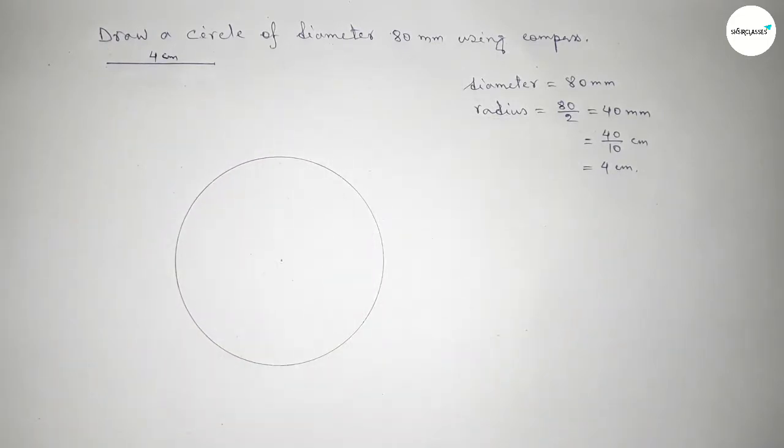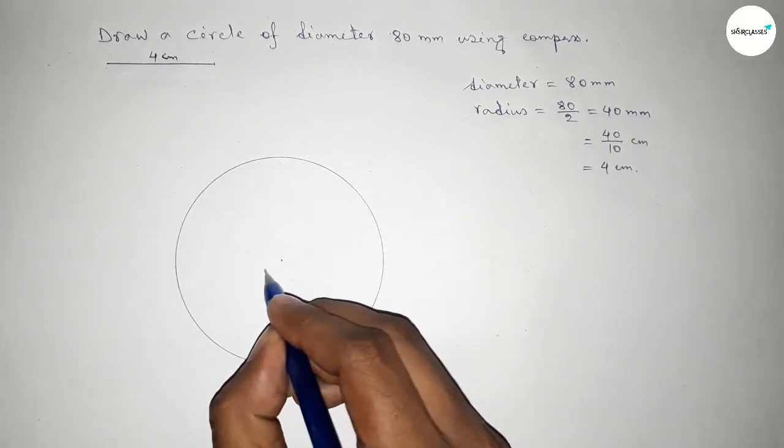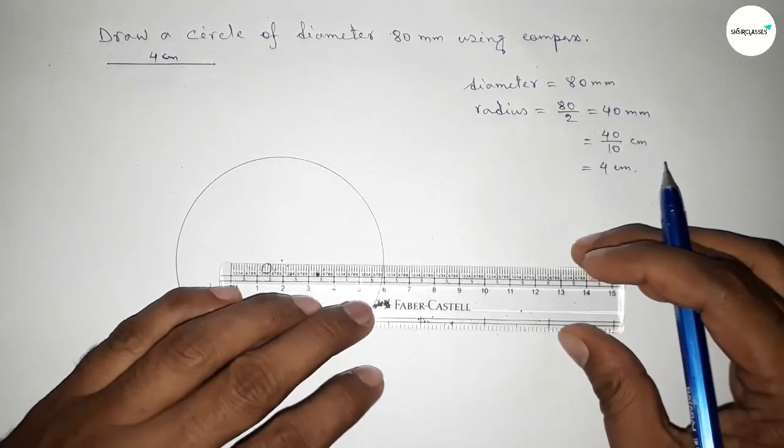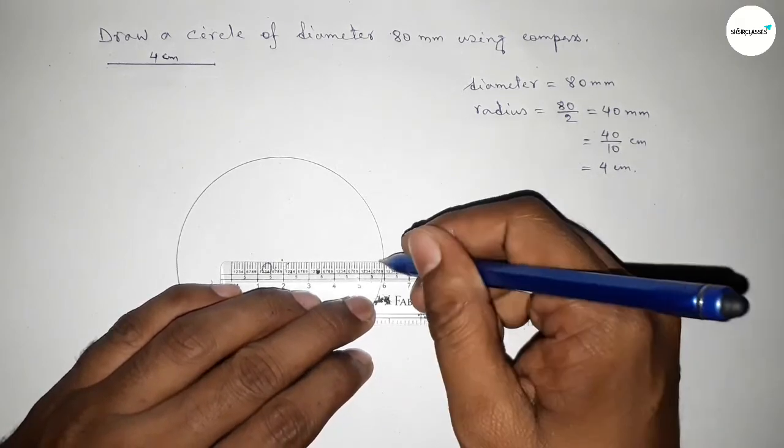And this is a circle. So here the center, taking here point O. Now joining this line and this is the radius of this circle.